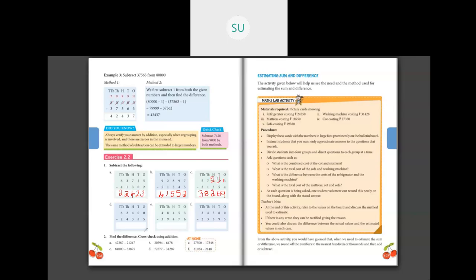Problem d: ones place zero minus five — can't do it, tens is also zero. Move to hundreds: borrow from hundreds, so that four becomes three, tens becomes ten. Ten becomes nine and ones becomes ten. Ten minus five is five. Nine minus eight is one. Three minus three is zero. Thousands: two minus four — borrow from ten thousands; six becomes five, two becomes twelve. Twelve minus four is eight. Five minus two is three. Answer: 38,015.